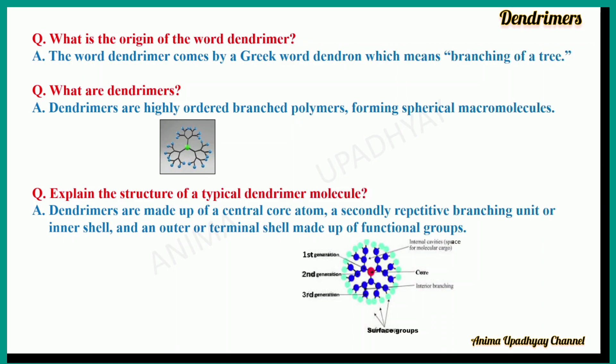Explain the structure of a typical dendrimer molecule. A typical dendrimer is made up of a central core atom, as you can see in the figure. The red atom is the central core atom, which is surrounded by repetitive branching units or the inner shell, followed by an outer or terminal shell made up of functional groups. In the figure, you can see the central core atom — the red atom — which is the core atom, then the first generation, second generation, third generation, and the surface groups.